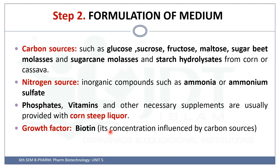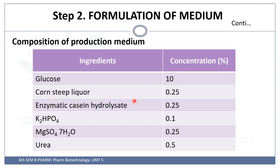Coming to the second step: formulation of the media. Carbon and nitrogen sources like glucose, sucrose, fructose, maltose, sugar beet molasses, sugar cane molasses, and starch hydrolysate from corn or cassava are used as carbon sources. Ammonia and ammonium sulfate are used as inorganic nitrogen sources. Phosphate and vitamins are necessary supplements. Another important growth factor used for the production of glutamic acid is biotin, and the concentration of biotin influences the carbon sources used.